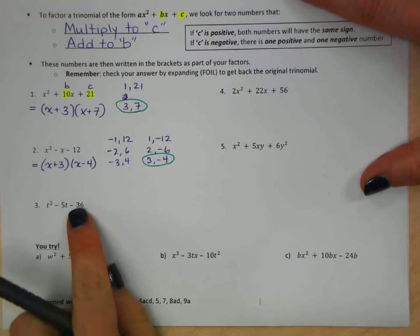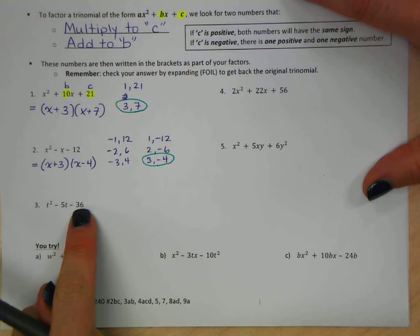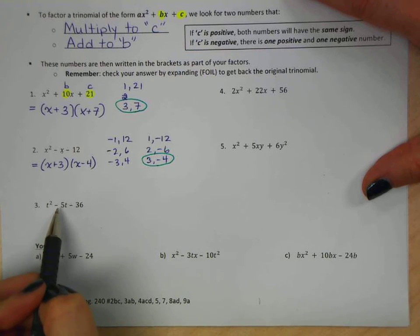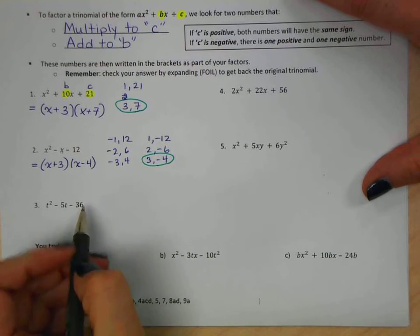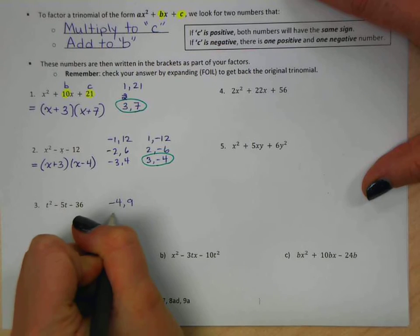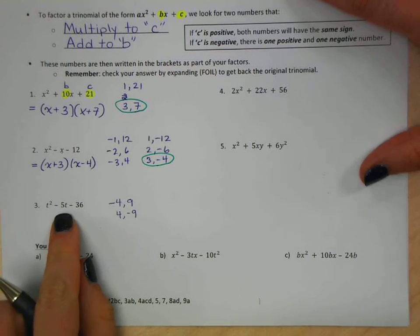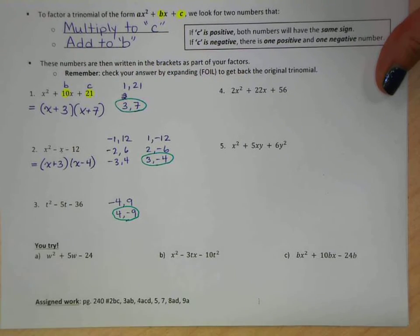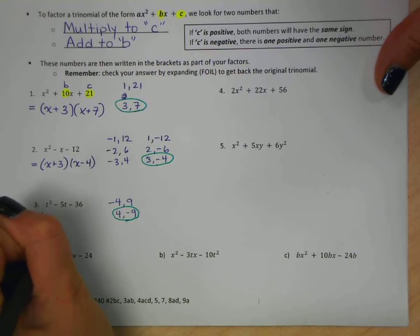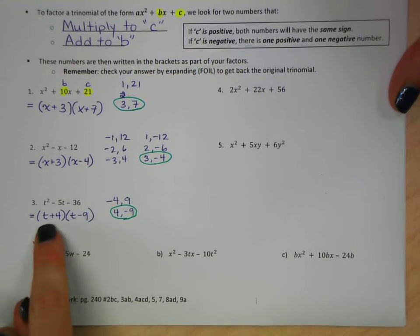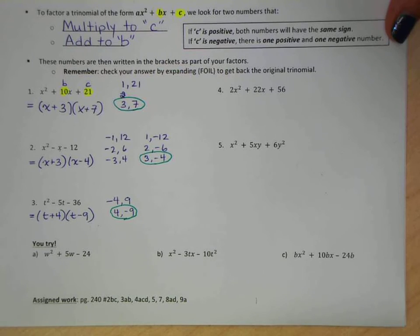Let's try the next one. So our c is negative 36. So let's just think about it. We have 1 and 36. So negative 1 and positive 36, or positive 1 and negative 36. That's never going to add up to be negative 5. So let's jump down. We know that 4 and 9 are going to work. So the options are negative 4 and positive 9, or positive 4 and negative 9. Which set adds to negative 5? Well, 4 minus 9 is negative 5. So that's our set. Our variable is t. t plus 4 times t minus 9. And there are two factors that multiply to give us that trinomial.